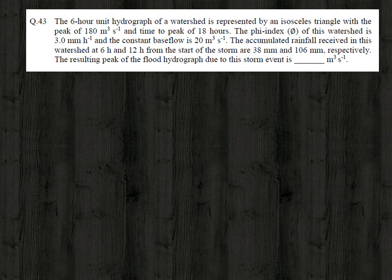The next question: the six-hour unit hydrograph of a watershed is represented by an isosceles triangle with a peak of 180 cubic meter per second and time to peak of 18 hours. The phi index of this watershed is 3 millimeter per hour and the constant base flow is 20 cubic meter per second.